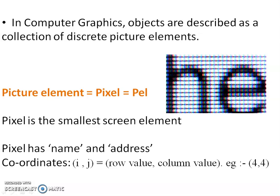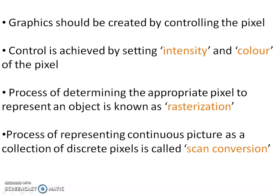Graphics should be created by controlling the pixel. Control is achieved by setting intensity and color of the pixel. Giving a color to a pixel and setting the intensity to that color is the main operation in computer graphics.